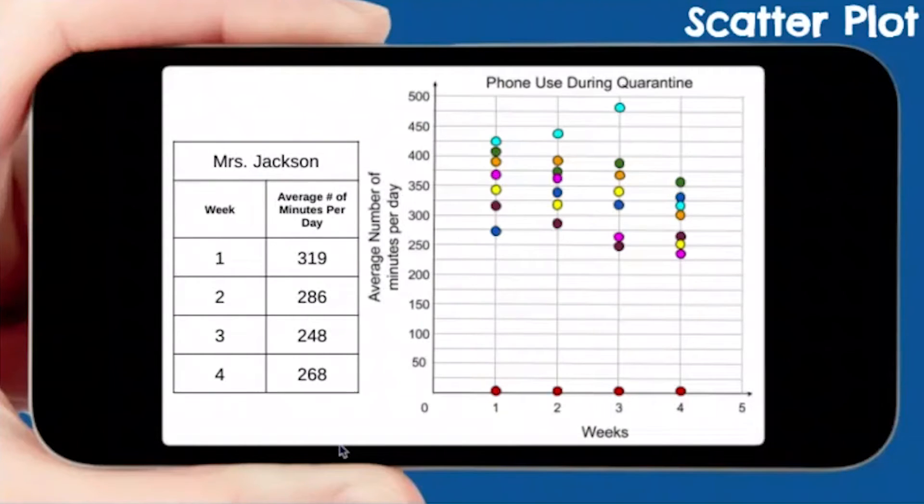Let's look at Miss Jackson's. See if you can guess Miss Jackson's. Week one, 319. It's going to be dark purple. Week two, 286. Still dark purple. Week three, 248. We'll go to week three, 248, almost to 250. Dark purple. And week four, 268. So Miss Jackson is dark purple.